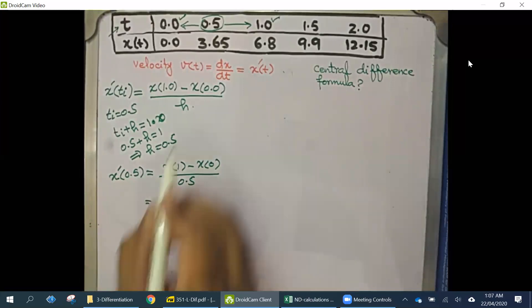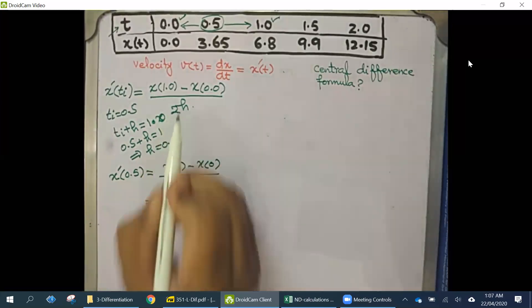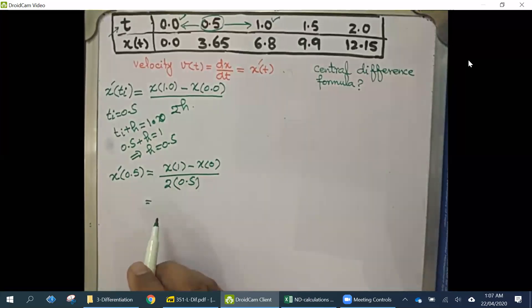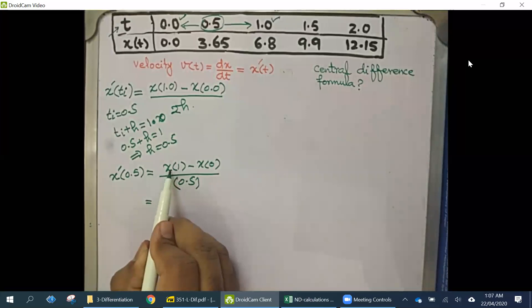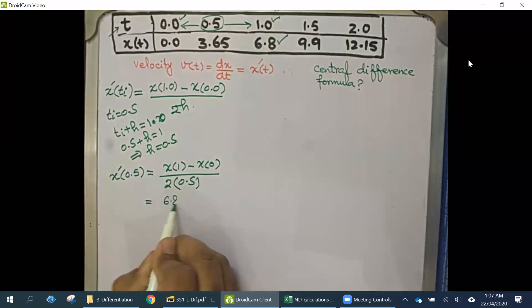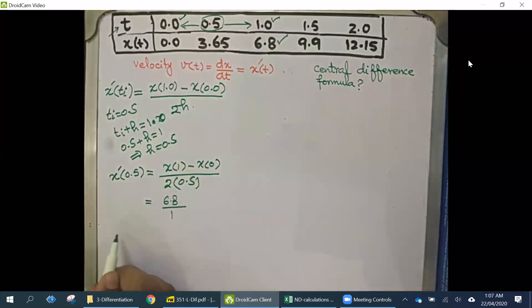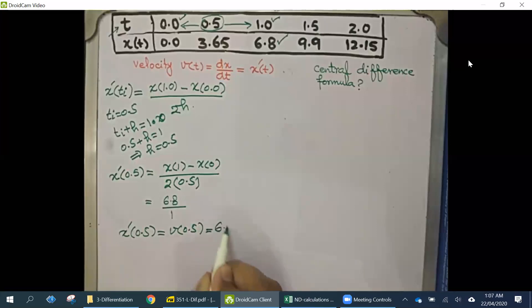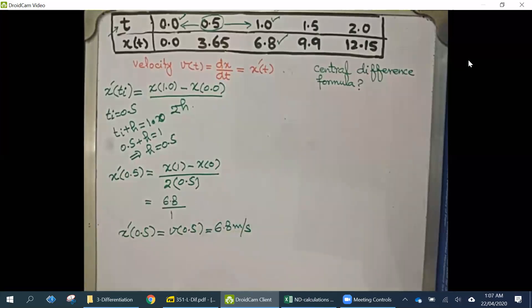The formula involves 2h — I just forgot to write the 2 initially. The value of x(1) is 6.8 and x(0) is 0, divided by 1. So the velocity at t = 0.5 is 6.8 meters per second.